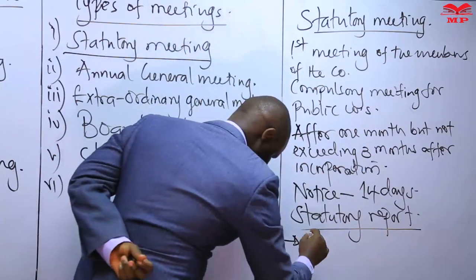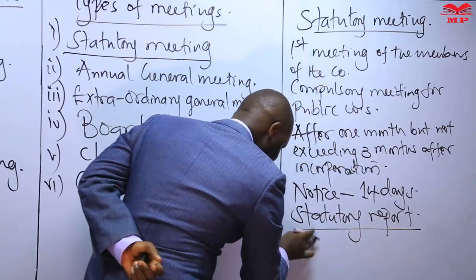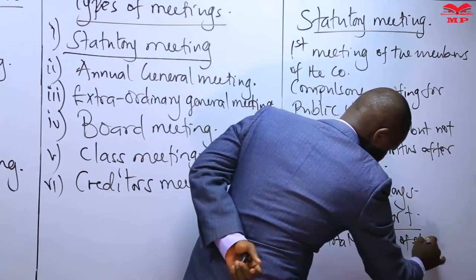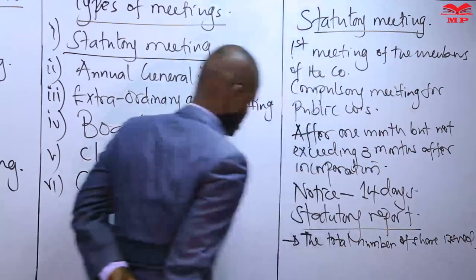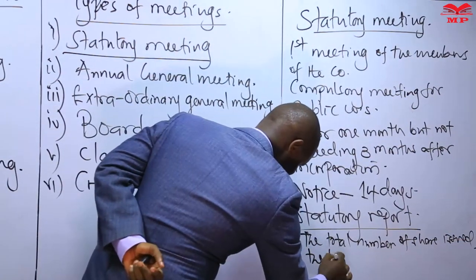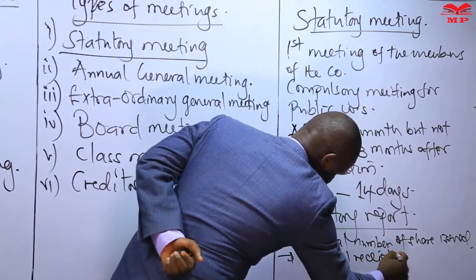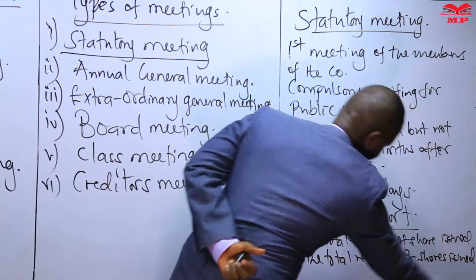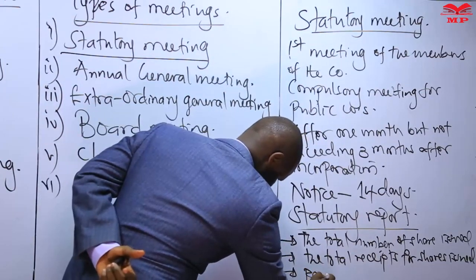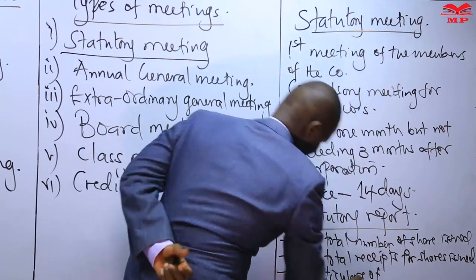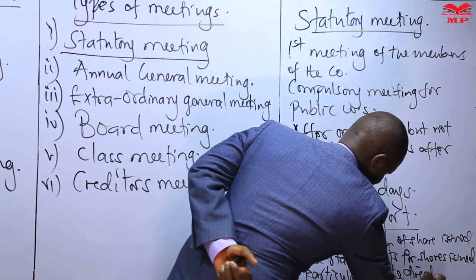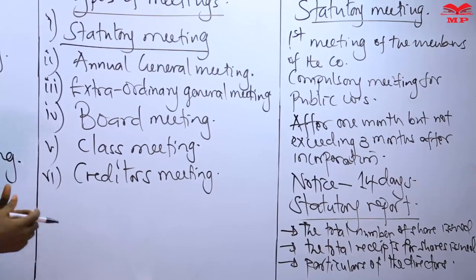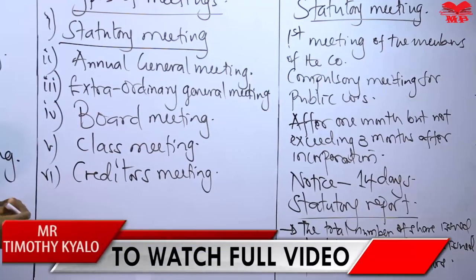The statutory report contains the following matters: it shows the total number of shares issued, the total receipts for shares issued, and most importantly, the particulars of the directors of the company. So the statutory meeting is the first meeting of the members, compulsory for all public companies.